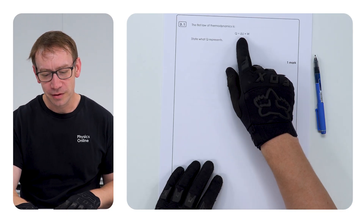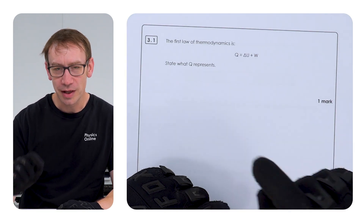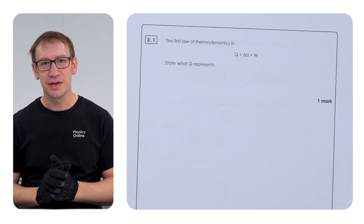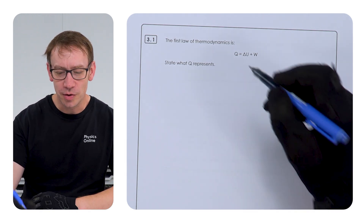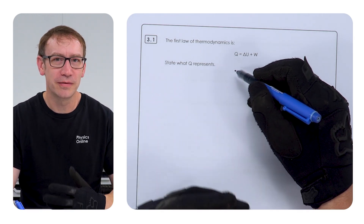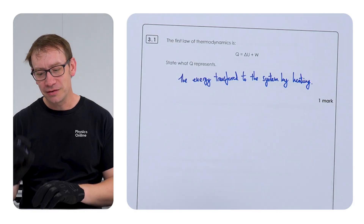Here we go with the actual exam questions. Now if you're unsure about any of this, don't worry — this is from the engineering option for AQA, so some of this isn't content that most people will have covered, but I just want to highlight the AO1, AO2 and AO3 answers. The first question is about the first law of thermodynamics: Q = ΔU + W. What does Q represent? Well, if you know your physics and you've done your revision, this is a simple easy mark — Q represents the energy transferred to the system by heating. You either know it or you don't.